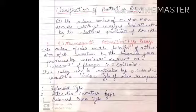The third subtype is the balanced beam type. In this relay, the armature is fastened to a balanced beam. For normal current, the beam remains horizontal. But when the current exceeds, the armature gets attracted and the beam gets tilted, causing the required operation.